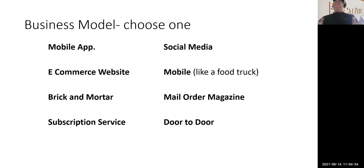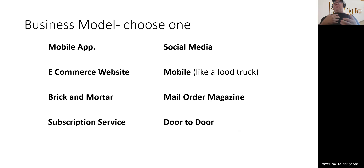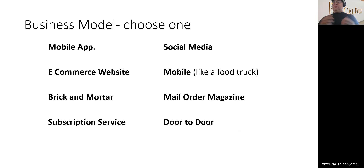The business model is something you choose on your own. It determines how your product and service will be marketed. Options include a mobile app, social media, a food truck, mail order magazine, door to door, a physical brick-and-mortar location, or a subscription service. You pick one of these eight modalities for your project.